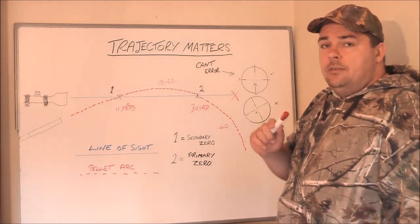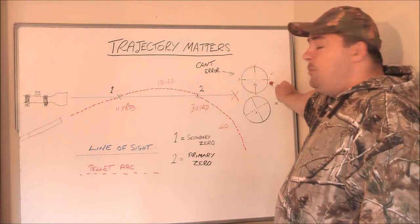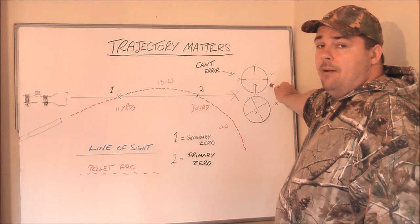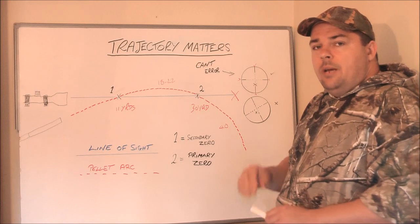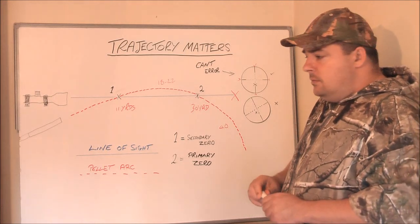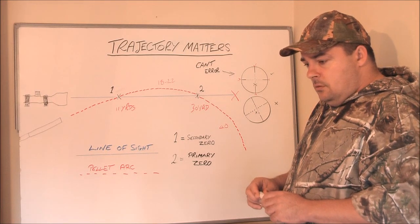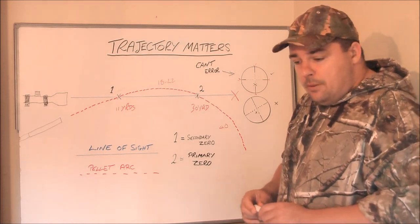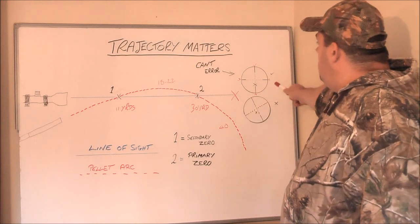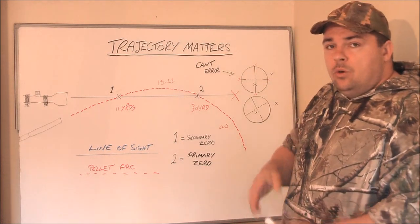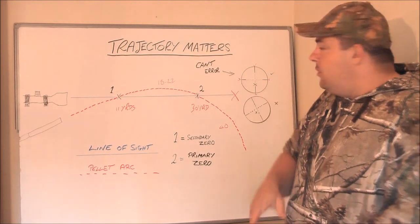And this device was designed, intended to get rid of Parallax Error. But Cant Error is where you're tipping the rifle over. Cant Error is where you're tipping the gun over to one side.